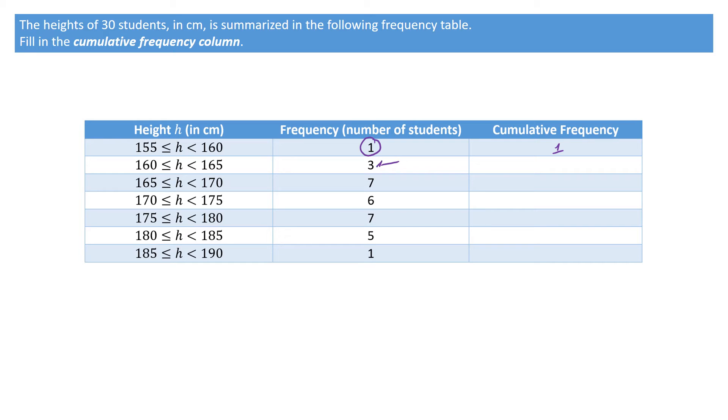We carry on this way. We have a cumulative frequency of four, and to find the next one we add the seven, so four plus seven would be eleven.